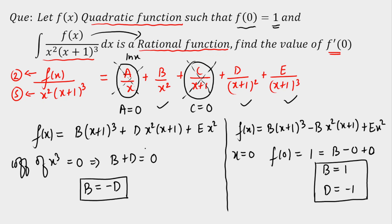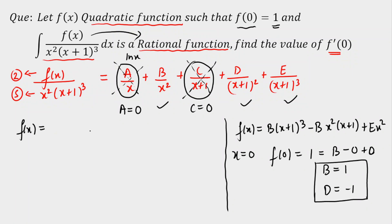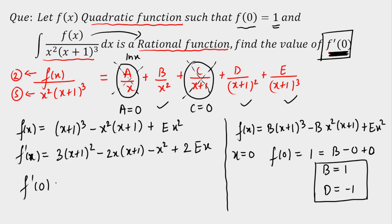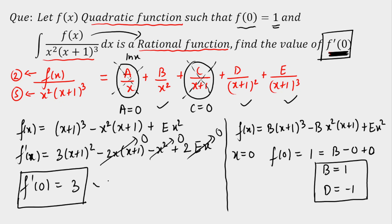Rewriting f(x) = (x+1)³ - x²·(x+1) + e·x². To find f'(0), I differentiate: f'(x) = 3(x+1)² - [2x·(x+1) + x²] + 2ex. Substituting x = 0: f'(0) = 3·1 - 0 - 0 + 0 = 3. So f'(0) = 3, and that is our final answer.